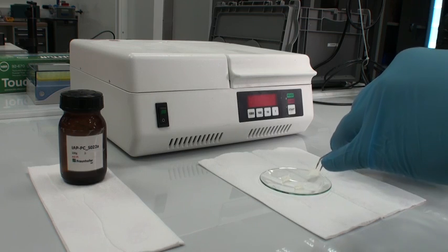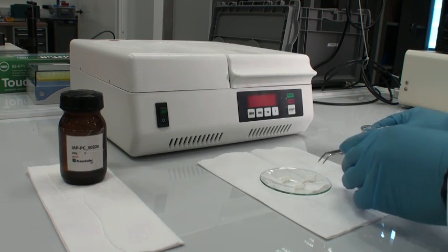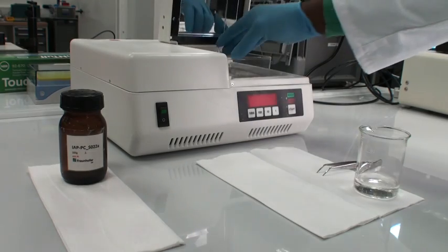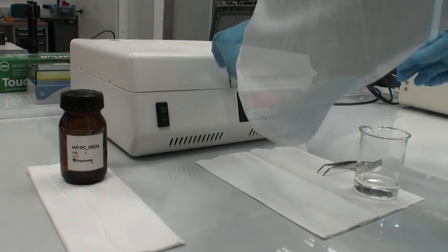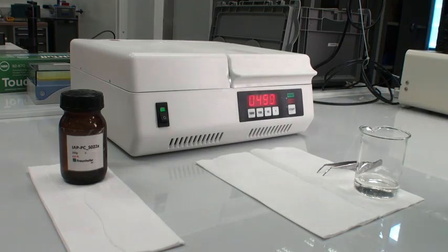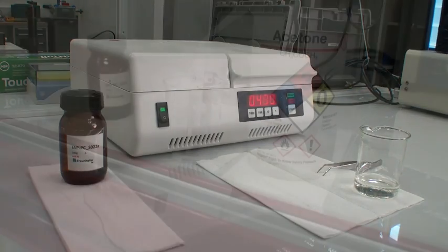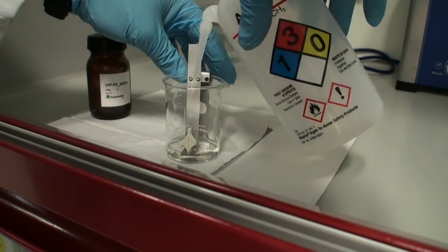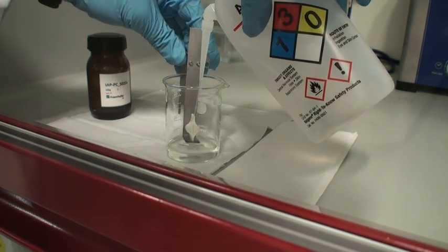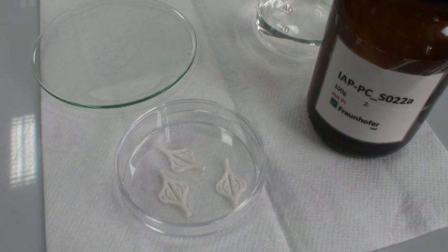After polymerization, a developmental step is necessary to remove unpolymerized material. Additive freeform fabrication is the only way to produce branched hollow tubes with porous walls.